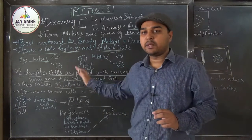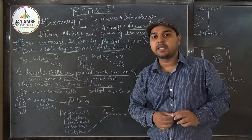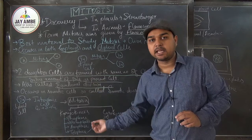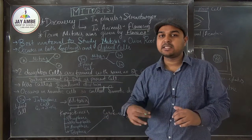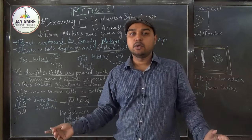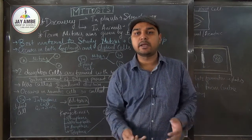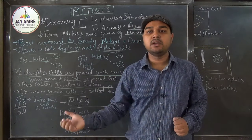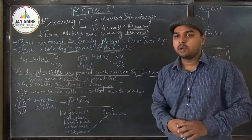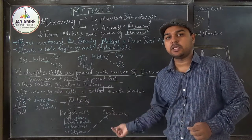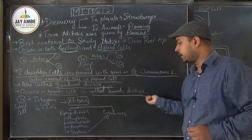This equational type of cell division — mitosis — basically occurs in somatic cells. There are two types of cells: germ cells and somatic cells. Cells that help in growth are called somatic cells, and cells that help in reproduction — like sperm and ovum — are called germ cells. Mitosis occurs in somatic cells, and meiosis occurs in germ cells.